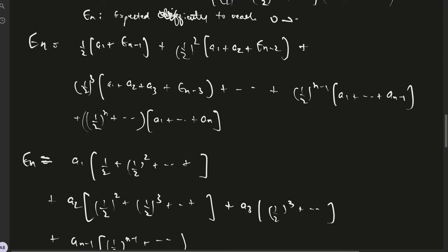Now En can be written as half times (a1 plus E(n-1)), which is the probability of taking 1 as a stop index. Another option we have is if we don't take 1 as a stop index and we take 2 as a stop index. In that case, the probability is 1/4, since probability of not taking 1 is half and probability of taking 2 is half. So it's 1/4 times (a1 + a2 + E(n-2)), and this way we go on.